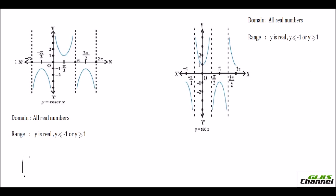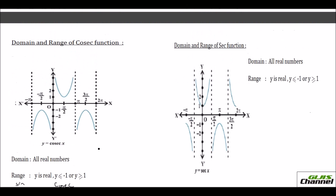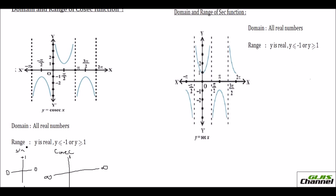Next is cosecant x, which is the reciprocal of sine. Recall for sine: it takes values 0, positive 1, 0, and negative 1. Taking the reciprocal: where sine is 0, cosecant is 1/0 — undefined, or infinity. Where sine is 1, cosecant is 1. At 270°, sine is 0 so cosecant is undefined again. Where sine is negative 1, cosecant is negative 1.